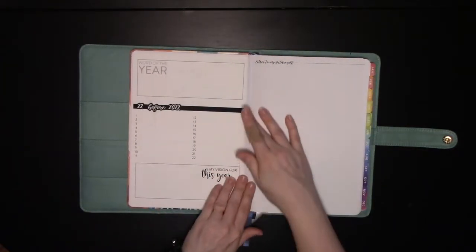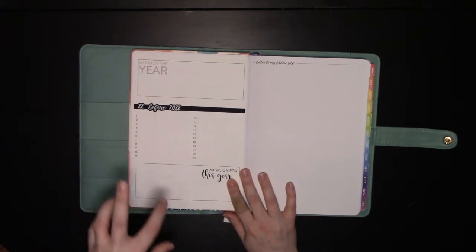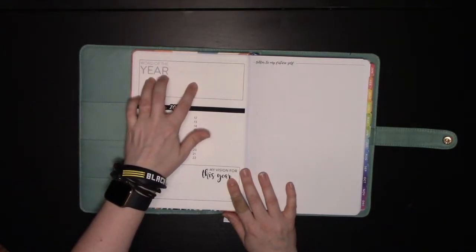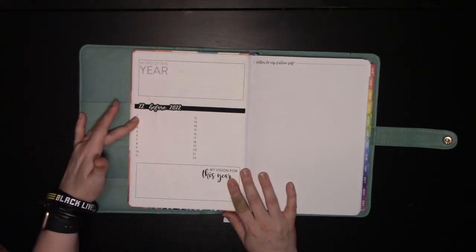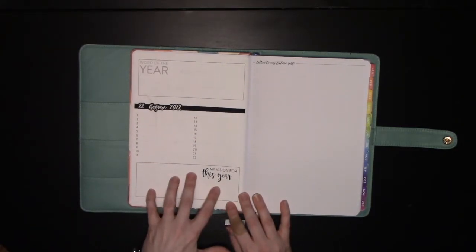The next page I have, this is in my shop. This is the word of the year, year to glance page. Word of the year, I'll select 22 before 2022, 22 things I want to accomplish this year, and then my overall vision for the year.